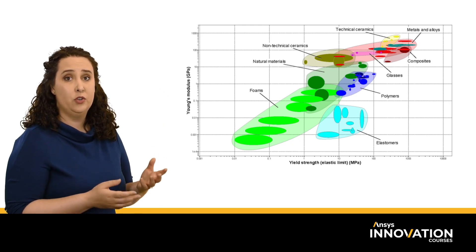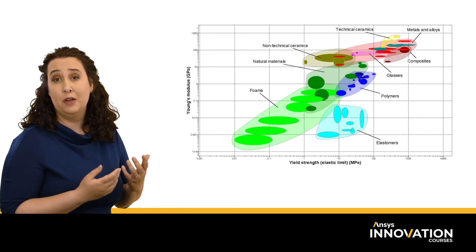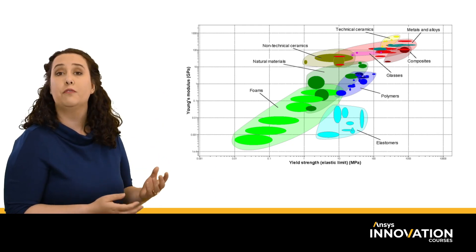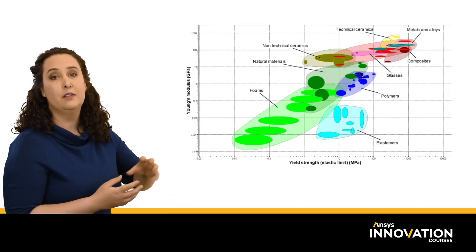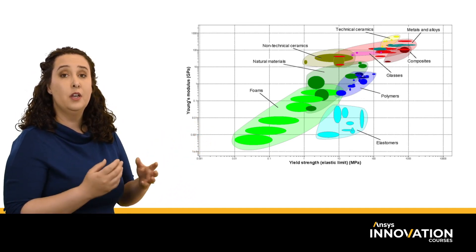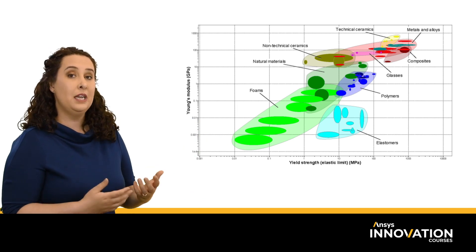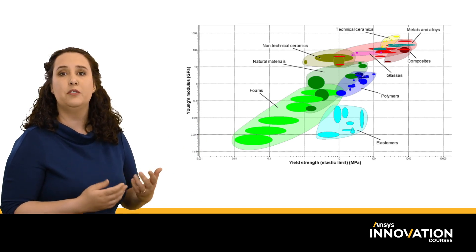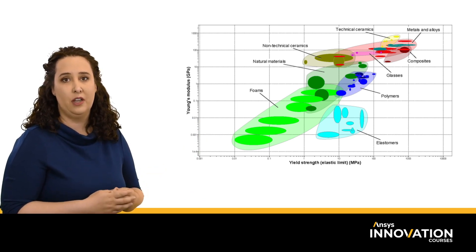Now, looking at this chart, I can already see that there are some unsuitable materials, such as our foams, which exist down here in this lower left-hand quadrant. So we need to begin screening our materials or removing unsuitable candidates based on our design criteria.